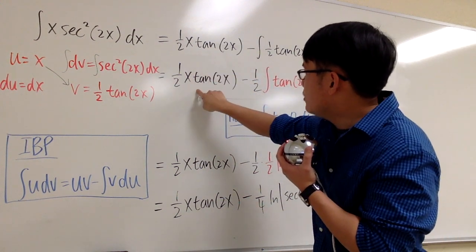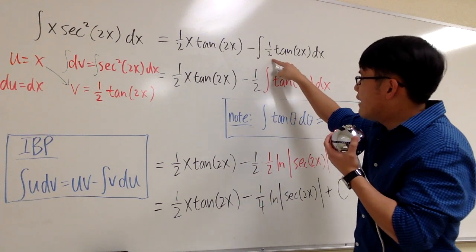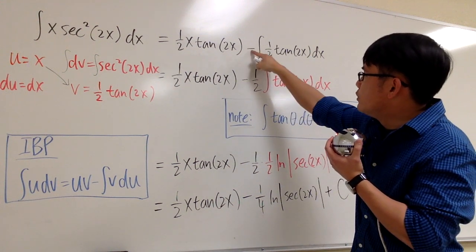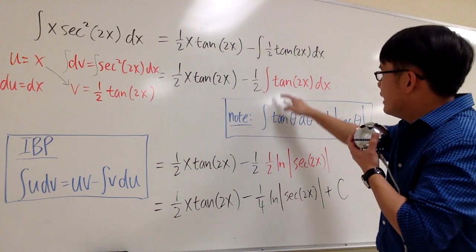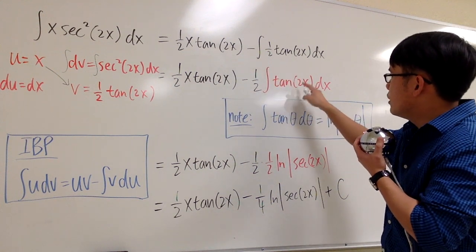Let me just copy this down. And then here we have the 1 half. Let me take the 1 half outside of the integration. And then we still have a subtraction right here. And let's focus on the integral tangent of 2x dx.